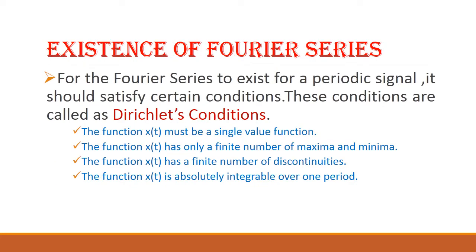Next, we are going to see Dirichlet's conditions. For a Fourier series to exist for a periodic signal, it should satisfy some conditions called Dirichlet's conditions. The first condition is: the function x(t) must be a single-valued function.